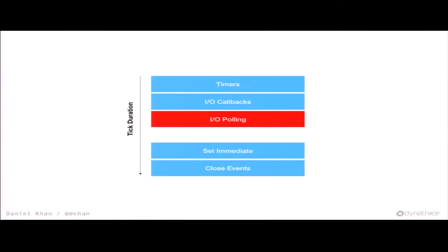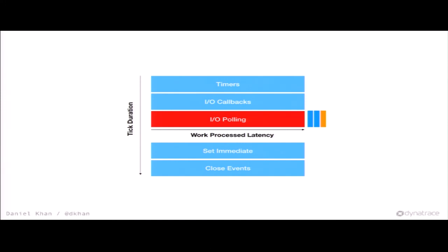Important here: while we measured tick duration vertically before, we are now measuring work process latency horizontally. There can be many ticks during the time IO polling is ongoing. This means tick duration is not directly correlated with thread pool congestion — every time there's nothing to process in IO polling but the thread pool is still busy, the ticks just proceed one after another.